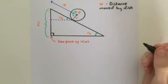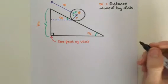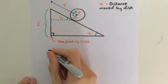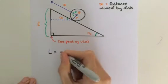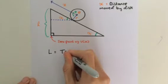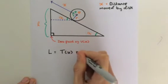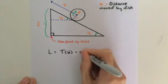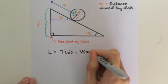First of all, we need to establish the Lagrangian. As we already know, the Lagrangian L is equal to your kinetic energy, which is a function of x dot, minus your potential energy, which is a function of x.